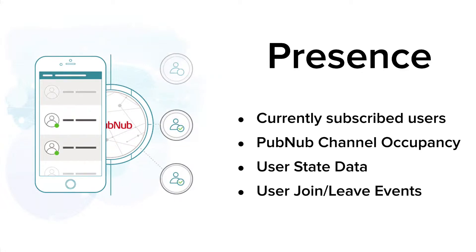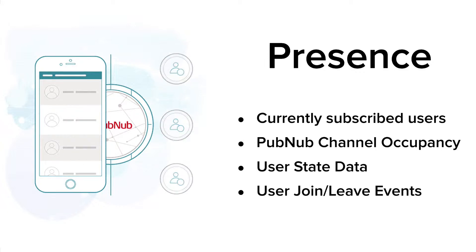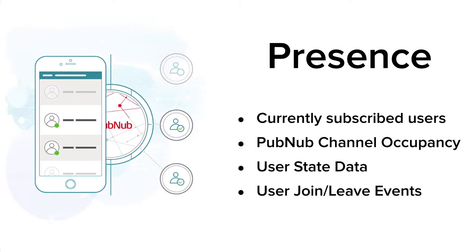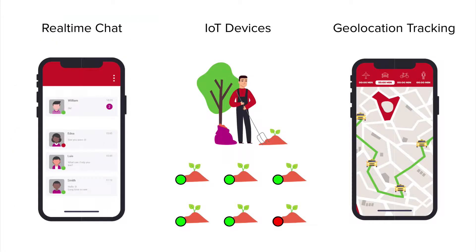The PubNum Presence API provides easy-to-implement functionality for accounting which users or devices are subscribed on your PubNum connection. The API enables client SDK methods to be called to check which user IDs are currently subscribed to a channel.